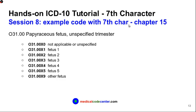There is also a type of code in chapter 15 related to childbirth that needs a 7th character. For example, O31.00, papyrus fetus, unspecified trimester: in this case a number is used as the 7th character — 0 for not applicable or unspecified fetus, 1 for fetus 1, 2 for fetus 2, and so forth.